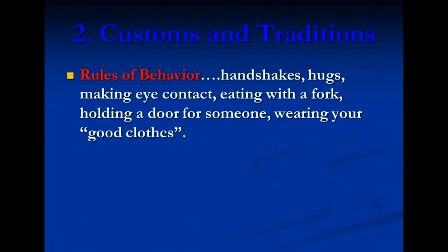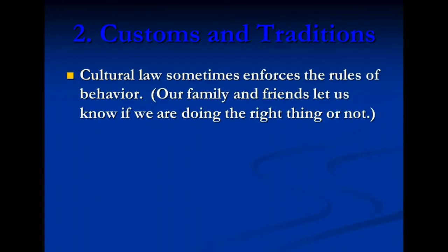The second element is customs and traditions. These are the rules of behavior: handshakes, hugs, making eye contact, eating with a fork, holding the door for someone, or wearing your good clothes when you go out. Cultural law sometimes enforces the rules of behavior. Our family and friends let us know if we're doing the right thing or not.